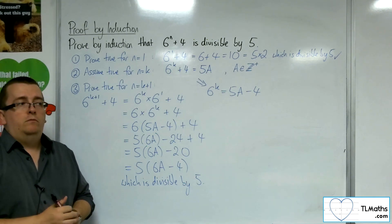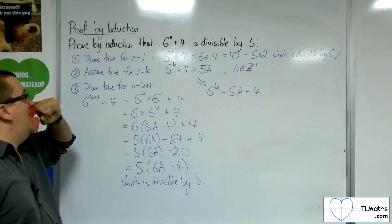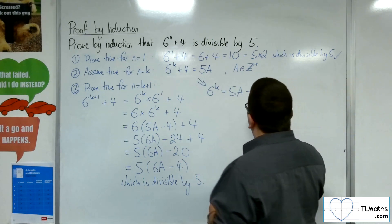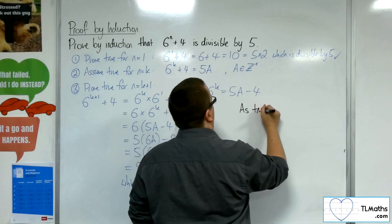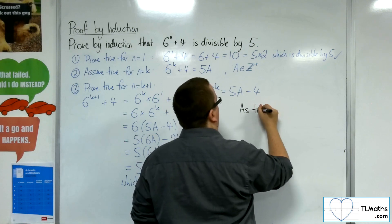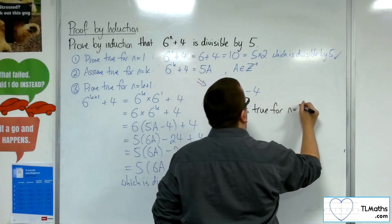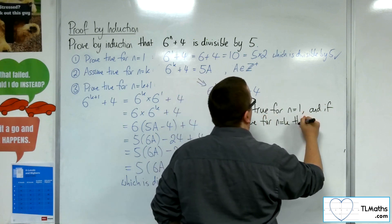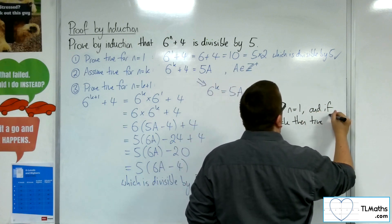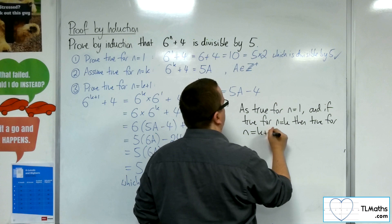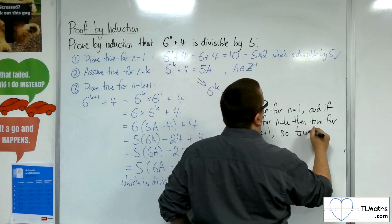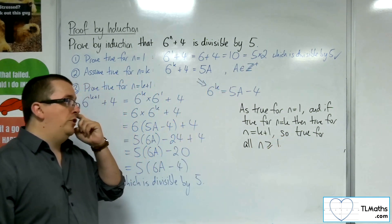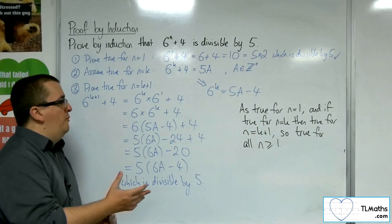So I've proved by induction that 6 to the n plus 4 is divisible by 5. Our concluding statement: as true for n equals 1, and if true for n equals k then we've shown it's true for n equals k plus 1. So it must be true for all n greater than or equal to 1, for all positive integers n. And so that is our proof by induction.